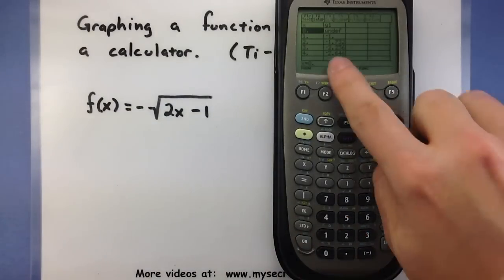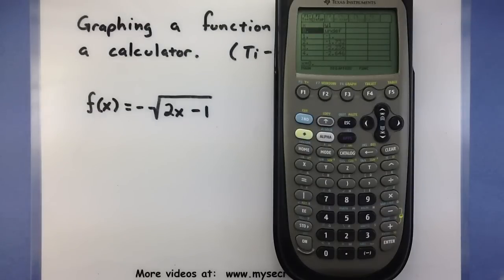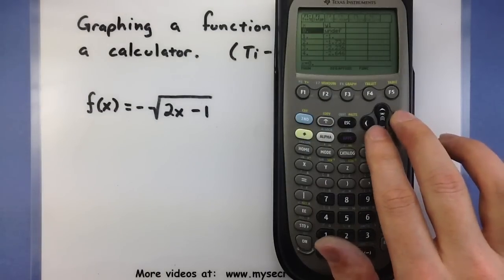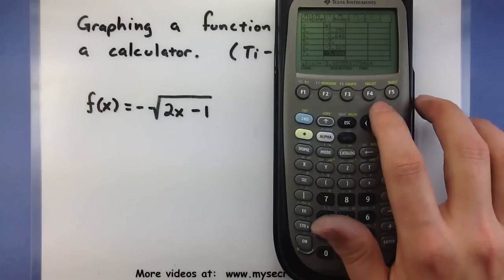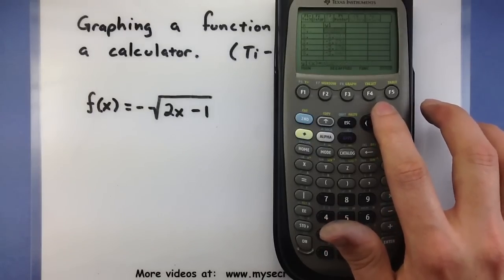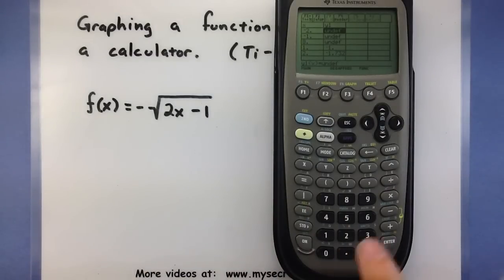So as you can see, my x values start at 0 and they go up by 1 every time. And the values that I get out of my function are displayed under y1. So here are all those values. You can see that some of them are undefined because it can't graph when a negative is underneath the square root.